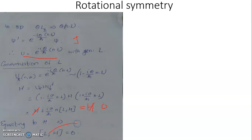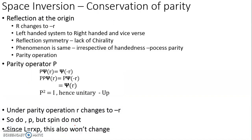The commutator [L, H] equal to zero indicates that L is a constant of motion. This gives rise to the law of conservation of angular momentum: the total angular momentum of a closed system is a conserved quantity, provided no external torque is acting on the system.